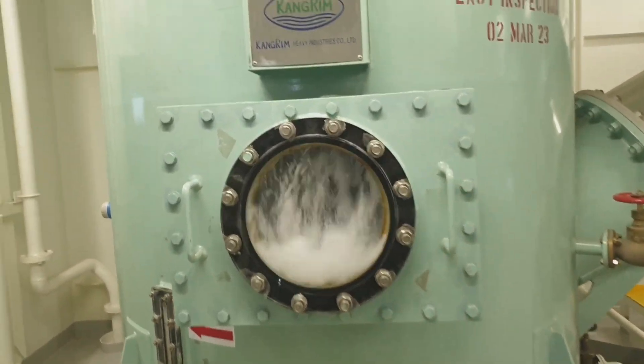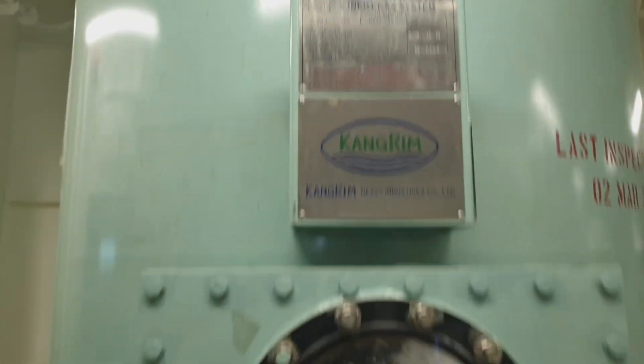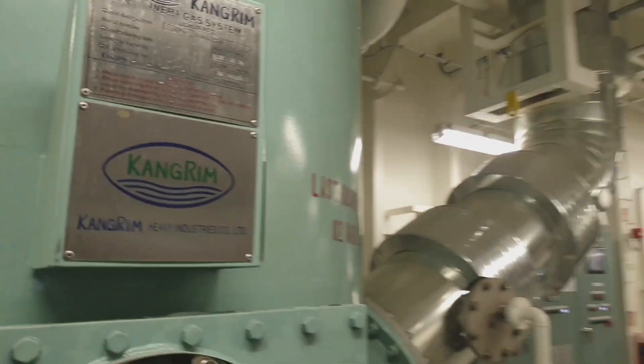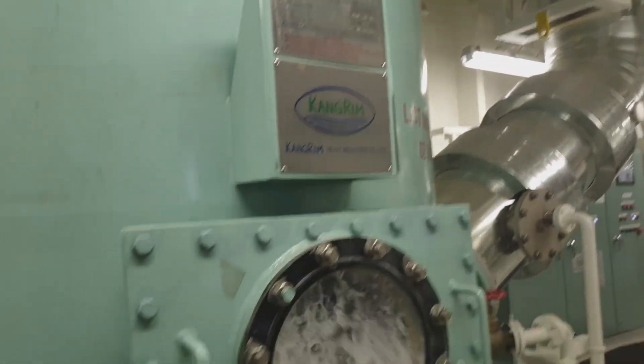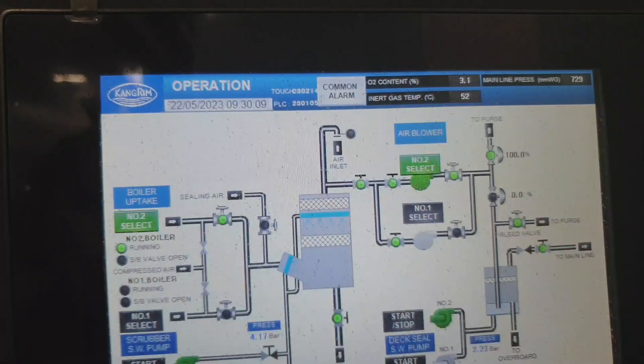This is the scrubber tower, operated by scrubber deck water seal pump at the minimum pressure of 1.5 bar. As you can see, the interaction of the inert gas and the scrubber cooling water in the flare from the inside of the scrubber tower.